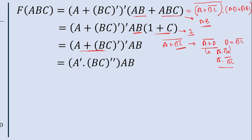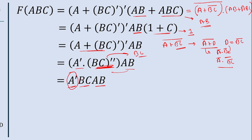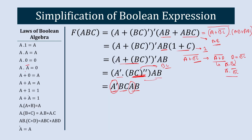So the simplified equation is A bar into BC double-bar, into AB. The double bar of BC equals BC. Multiplying A bar·BC with AB, we get A bar·BC·AB. Here we have both A and A bar — since A multiplied by A bar equals 0, the final result of this Boolean expression is 0.